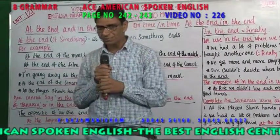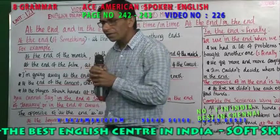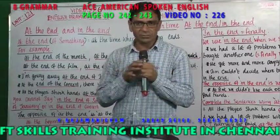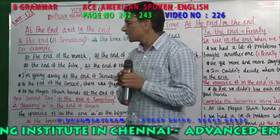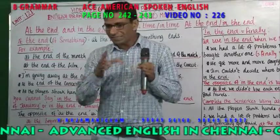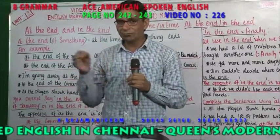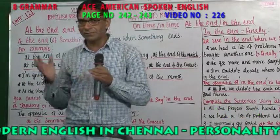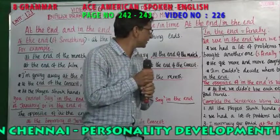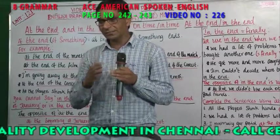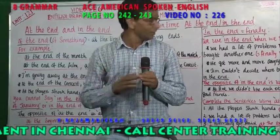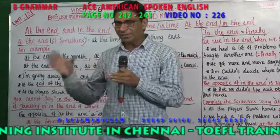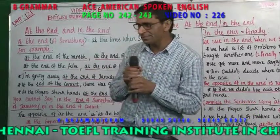Good morning everybody. I am Satish. Today what I have learned: first, on time — on time means punctual, be there at that time. In time means within that particular time. Any situation that ends within that particular time. Then at the end — at the end means when something ends, like at the end of March, at the end of January. The opposite of at the end is at the beginning — at the beginning of January, at the beginning of March. Then in the end — in the end means finally, the result of any situation. The opposite of in the end is at first — at first we did not like each other very much, but finally we like each other. Thank you.